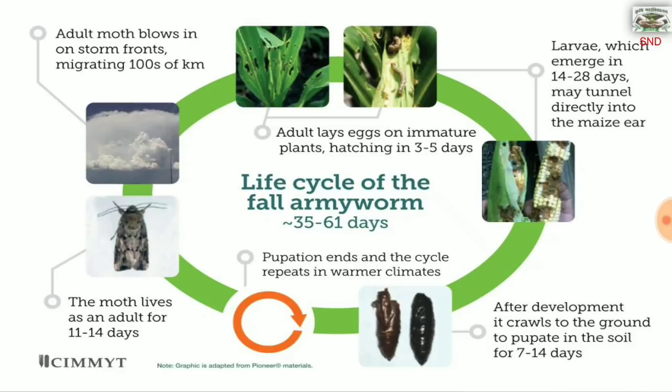The adult lays eggs on immature plants, hatching in 3-5 days. The larvae which emerge over 14-28 days may tunnel directly into the maize ear. After development, they crawl to the ground to pupate in the soil for 7-14 days. The pupation ends and the cycle repeats in warmer climates. The moth lives as an adult for 11-14 days, and the adult moth migrates on storm fronts, traveling hundreds of kilometers.